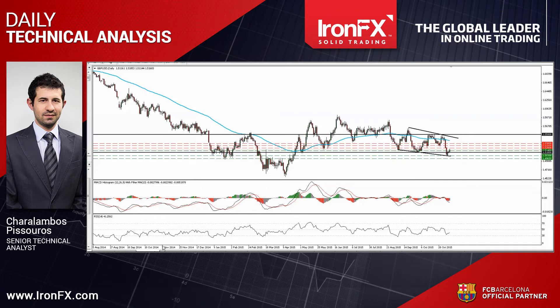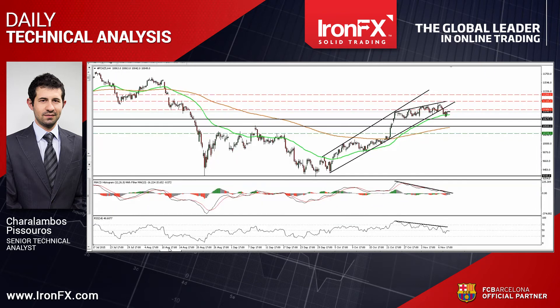Now let's continue with DAX Futures. DAX Futures fell below the uptrend line taken from the low of the 2nd of October and subsequently consolidated below the 10,900 resistance. Taking into account the break below the trend line and having in mind our momentum signs, I see the possibility for the index to correct lower in the near term. The RSI turned down after it hit 50, while the MACD, already below its trigger line, has just obtained a negative sign. There is also negative divergence between both these indicators and the price action.